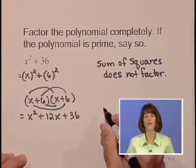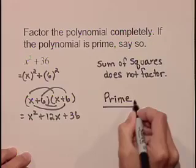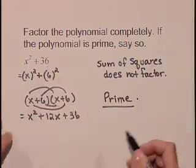So we would say that this expression, this polynomial, is indeed prime. x squared plus 36 is a prime polynomial.